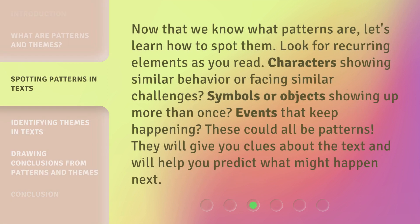Now that we know what patterns are, let's learn how to spot them. Look for recurring elements as you read — characters showing similar behavior or facing similar challenges, symbols or objects showing up more than once, events that keep happening. These could all be patterns. They will give you clues about the text and will help you predict what might happen next.